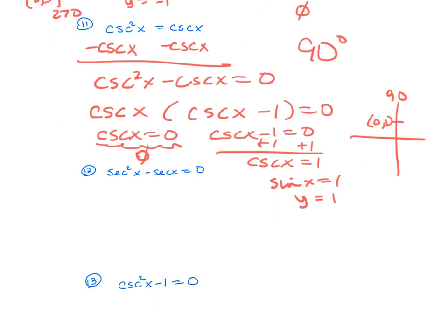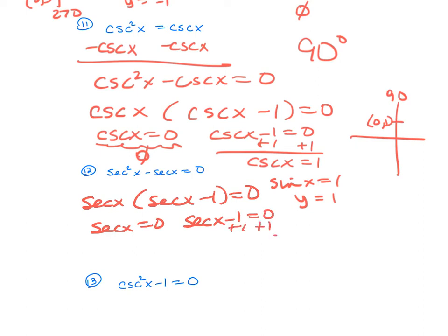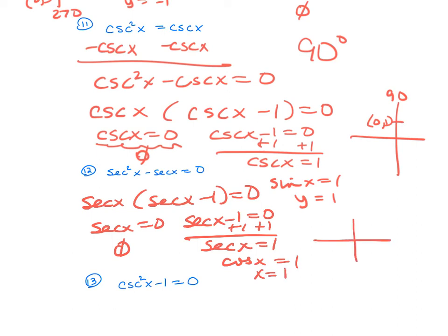Number 12 — I'm going to factor out a greatest common factor of secant x, giving secant x times (secant x minus 1) equals 0. Secant x equals 0 is no solution. For secant x equals 1, the reciprocal of secant is cosine, so I'm looking for where x in the ordered pair equals 1. That's just one ordered pair, corresponding to 0 degrees — the only answer for number 12.